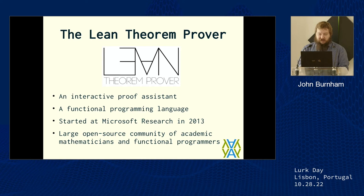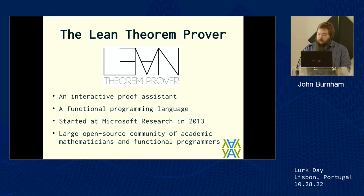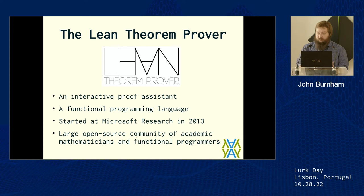Lean is a great interactive proof assistant with powerful type inference, tactics, metaprogramming, and it's also a great functional programming language like Haskell. The key thing about Lean is that it's being used by both actual professional academic mathematicians to formalize their work, and also by professional functional programmers to build applications. I'm really excited about Lean — I think everyone should look into it. It's one of the developments in computing over the last ten years that I'm most excited about.